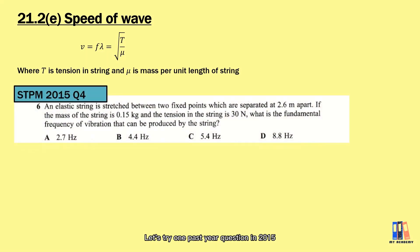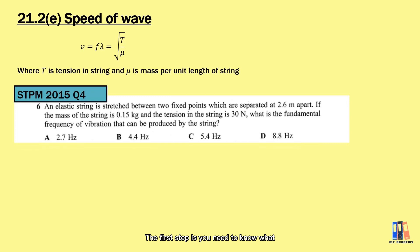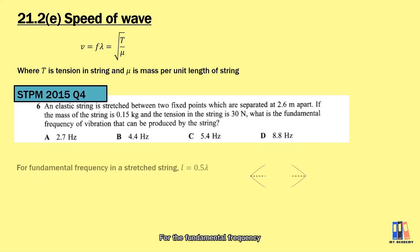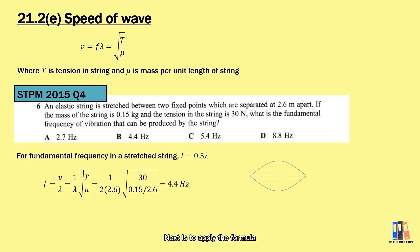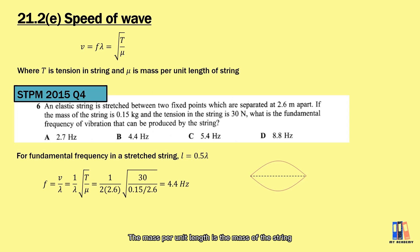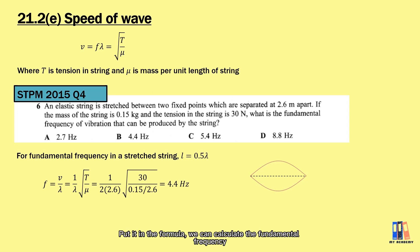Let's work through a past exam question from 2015. We have an elastic string of length 2.6 m, mass 0.15 kg, and tension 30 N. The first step is to find the relationship between length and wavelength — for the fundamental frequency, the length equals half of the wavelength, so the wavelength equals two times the length of the string. Next, apply f = V/λ and substitute in the formula for wave speed. The mass per unit length μ = 0.15 / 2.6. Putting this into the formula, we calculate the fundamental frequency as 4.4 Hz.